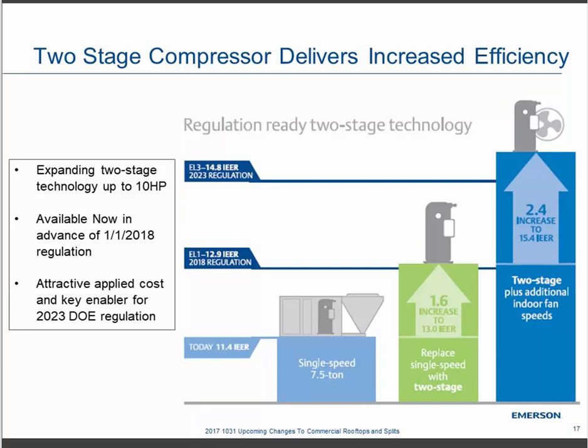This schematic shows that today's minimum efficiency for a seven and a half ton system is around 11.4 IEER. Our simulations show that dropping in the two-stage compressor can bump that up to hit the new 2018 regulation pretty easily. It also sets you up nicely for the 2023 regulation — just add variable speed or two-speed indoor fans, and you should be positioned well for that impending regulation.